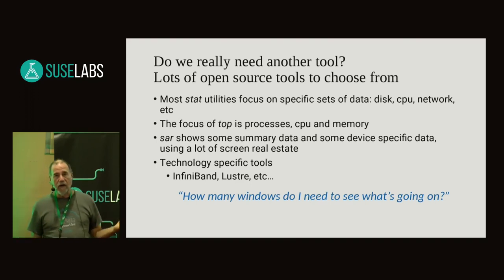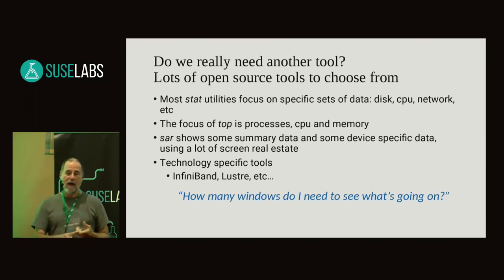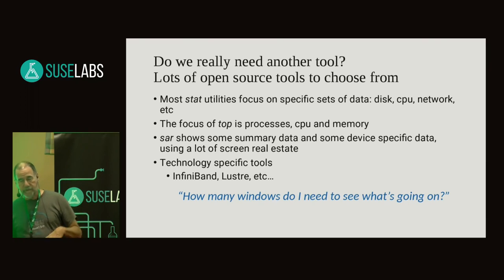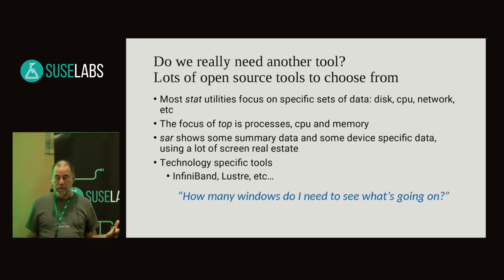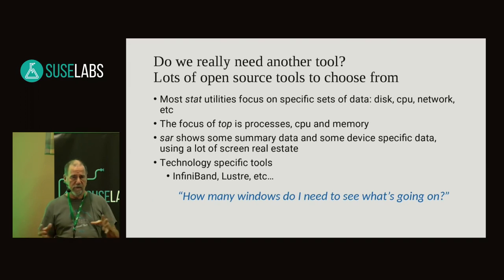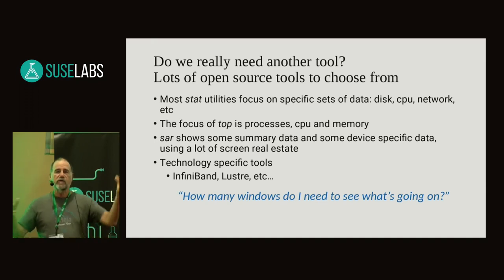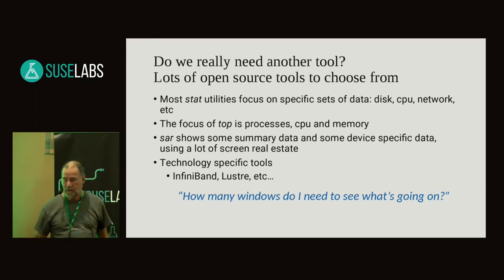There are a lot of tools out there that give you this data — what I think of as the STAT utilities: VMSTAT, NETSTAT, MPSTAT, IOSTAT, and of course TOP and SAR, which does quite a bit. All these tools focus on different things. There's also technology-specific tools. For example, if you're running InfiniBand, there aren't any InfiniBand utilities that are part of the kernel — there are tools like PerfQuery, but that's yet another tool. The question is, how many windows do I need to open if I'm trying to monitor three or four different things at the same time?